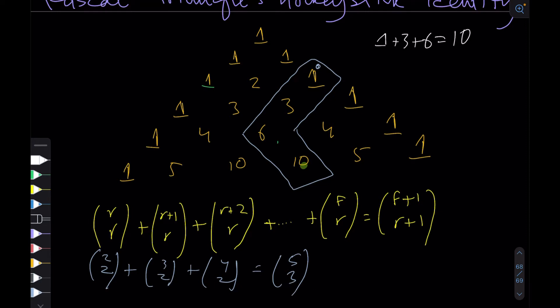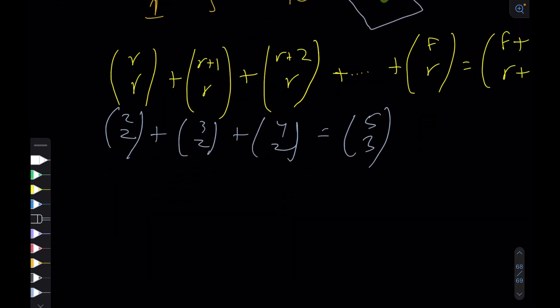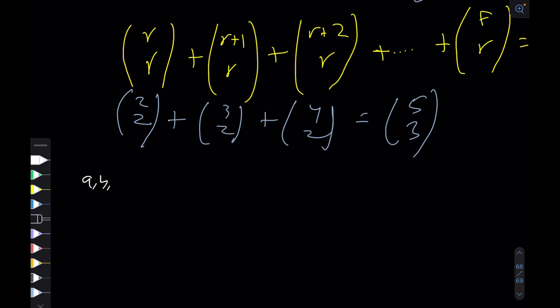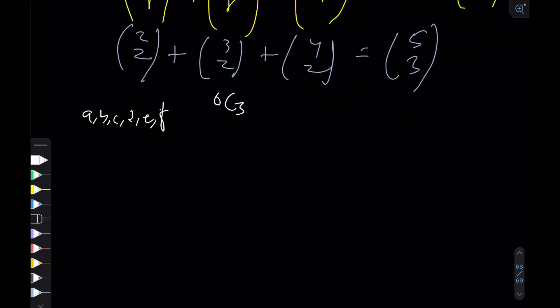To make sense of this, I'll take a concrete example. Let's say we have six elements — a, b, c, d, e, f — and I want to make sets of three. The number of such sets will be 6C3. A systematic approach is to first choose some element, say a, and then keep changing the rest.